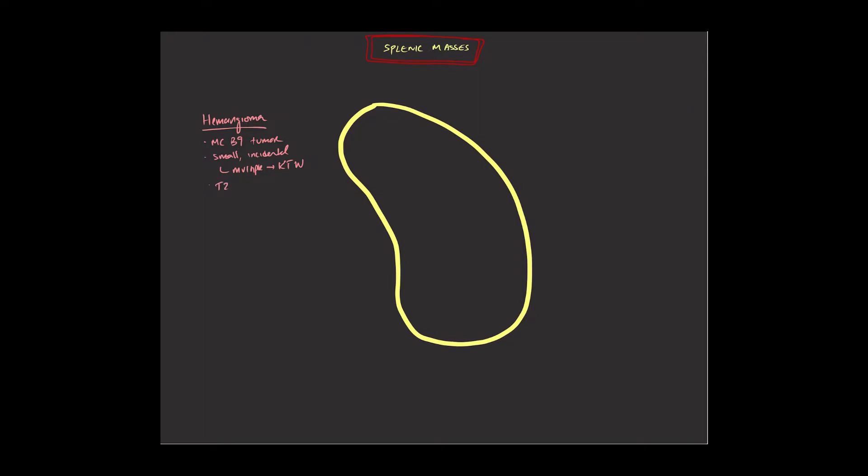And the imaging appearance, while non-specific, typically will have quite hyperintense T2 signal. And when you give contrast, there'll be some degree of peripheral enhancement with centripetal fill-in, much like hemangioma seen in the liver.